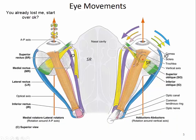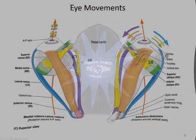You can refer back to this diagram showing all of the muscles, where they attach, and their names. The most important thing is you can see the optical axis versus the axis of the orbit. If you were pulling on this muscle, it would lead to some elevation, but it would also lead to medial rotation and intorsion.